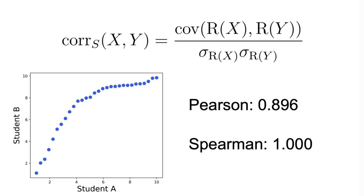This makes the Spearman correlation more suitable for detecting non-linear relationships. And in cases where the relationship between variables is not strictly linear, the Spearman correlation might yield a higher correlation coefficient compared to the Pearson correlation.